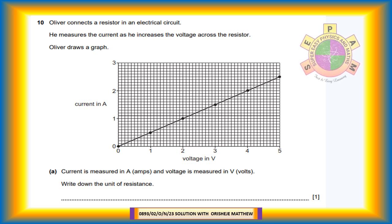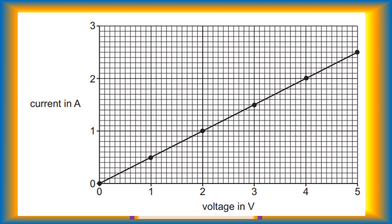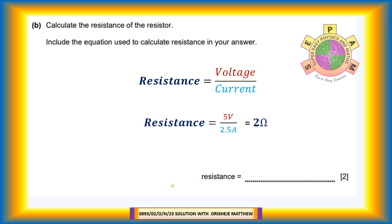Question 10. Question a: Current is measured in amps, and voltage is measured in volts. Write down the unit of resistance. The unit of resistance is ohms. Question 10b: Calculate the resistance of the resistor. Include the equation used to calculate resistance in your answer. Resistance is equal to voltage divided by current. From the graph, the resistor has a voltage of 5 volts when the current flowing in it is 2.5 amperes. Resistance equals 5 volts divided by 2.5 amperes. Resistance equals 2 ohms.